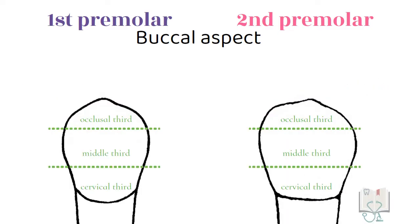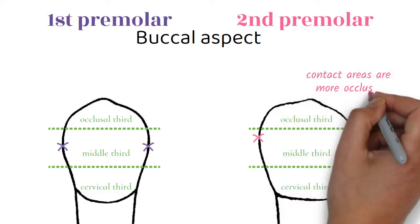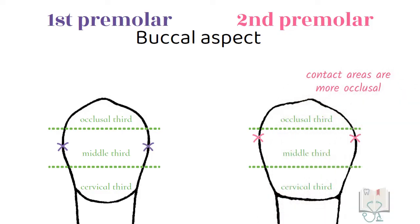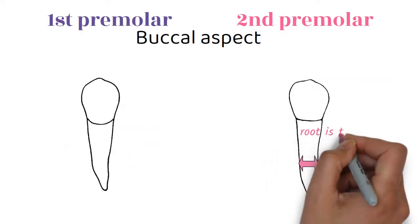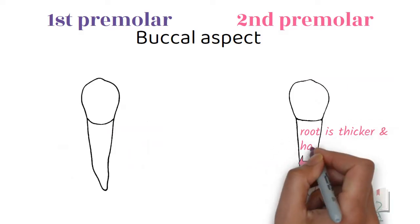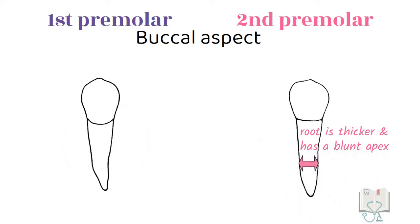The contact areas of both premolars are in the middle third; however, the contact areas of the second premolar are slightly more occlusal than in the first premolar. Moving to the root, in the second premolar the root is thicker and has a blunt apex when compared to the root of the first premolar.